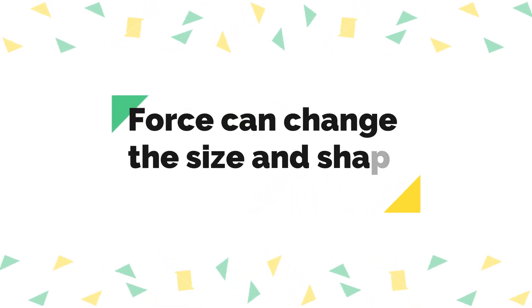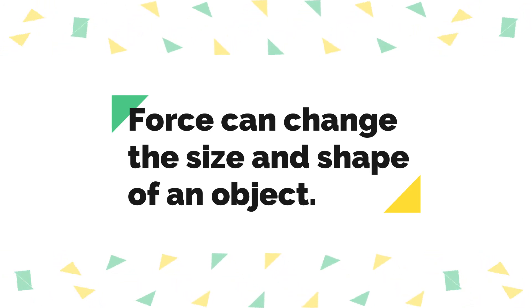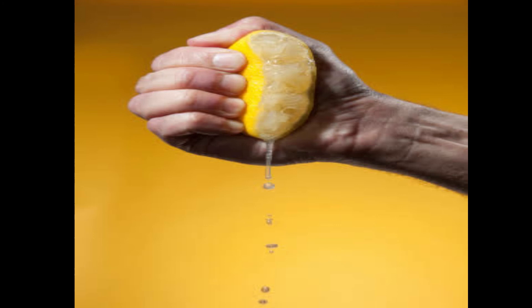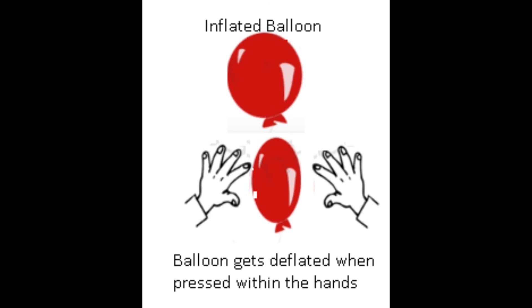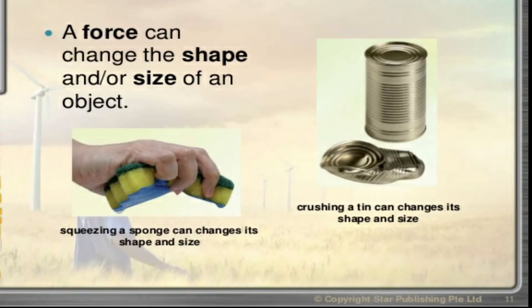The next application is: force can change the size and shape of an object. When a force is applied on an object, it may change its shape or size by bending, stretching, or compressing. For example, a potter makes pots of different shapes by kneading wet clay. By squeezing a lemon, it changes its shape. When we press an inflated balloon, it gets deflated. When we press dough with a rolling pin, we apply force and change its shape.